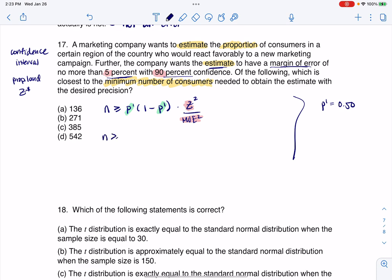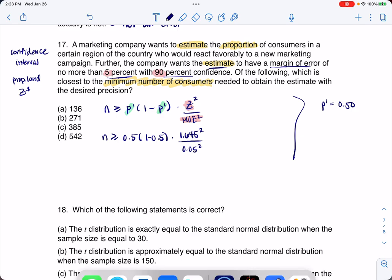I'm going to say N has to be greater than or equal to, this is going to be 0.5, 1 minus 0.5. All right, my Z was 1.645, I'm going to square that. And my margin of error was 5%, I'm going to square that. And I'm just going to crunch this on my calculator and see what I get.